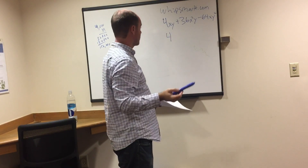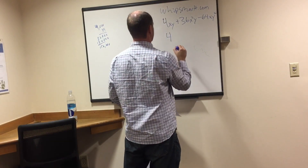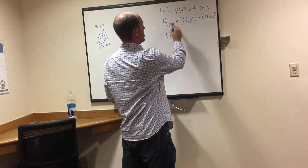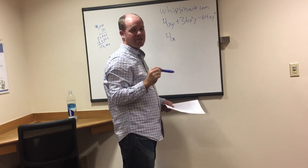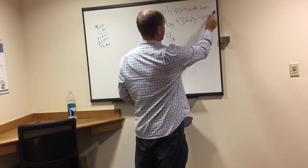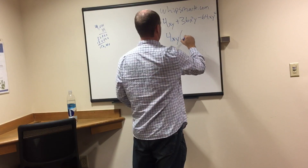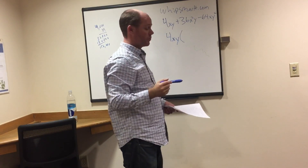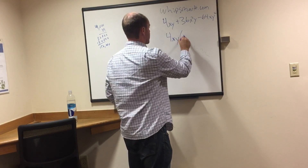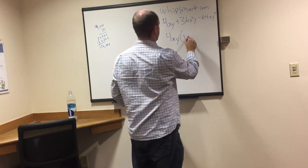Then we look at the variables. Is there an x in all three terms? Yes: x, x, and x. Can we take out x squared? Here we have x squared, but here we just have x — so the answer is no, just x. What about y? We have y, y, and y squared. Since we only have single y's in the first two terms, we can take out just y. So 4xy is what we can take out.